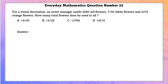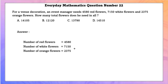Everyday Mathematics question number 22. For venue decoration, an event manager needs 4,580 red flowers, 7,150 white flowers, and 2,375 orange flowers. The total number of flowers needed is 14,105.